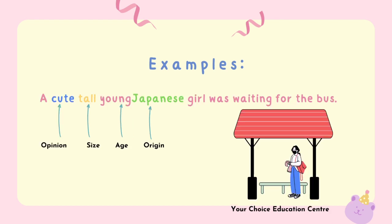Example three: 'A cute tall young Japanese girl was waiting for the bus.' Here the adjectives follow the order: opinion, size, age, and origin.